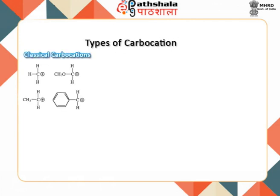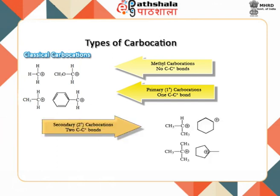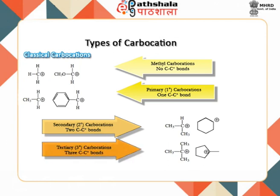Carbocations have been categorized as classical and non-classical. Classical carbocations include methyl, primary, secondary, and tertiary carbocations. You are already familiar with the methyl carbocation. Primary carbocations are those in which the carbon bearing the positive charge is attached to one alkyl or aryl group. In secondary carbocations, it is attached to two alkyl or aryl groups. In a tertiary carbocation, it is attached to three alkyl or aryl groups.